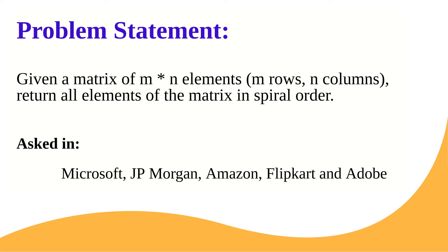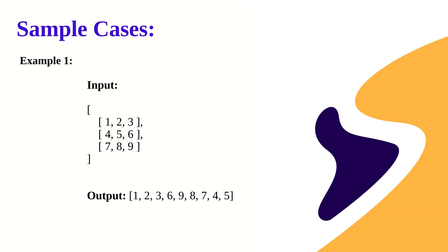Let me explain the problem statement with the help of an example. If the input array is M cross N where M is the number of rows — which is three — and N is the number of columns — also three — we need to print this matrix in spiral order. We start from the left topmost element, which is one, and move in the spiral order.